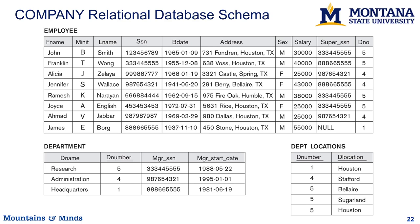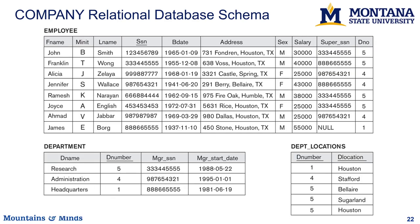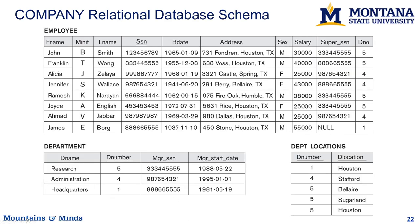We will work with the following relational database schema, where we have six tables. We have the employee table, which holds employee names, their social security numbers, their birthdays, their address, their sex, their salary, their supervisor's social security number, and their department number. The cool thing about the supervisor's social security number is that it just references another social security number in the table, so the only person without a supervisor is James E. Borg.